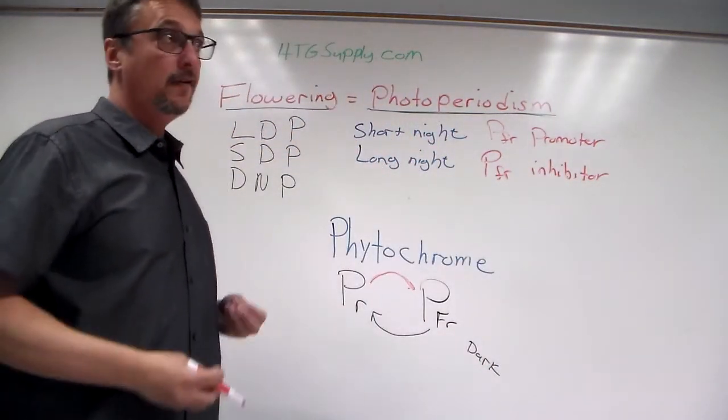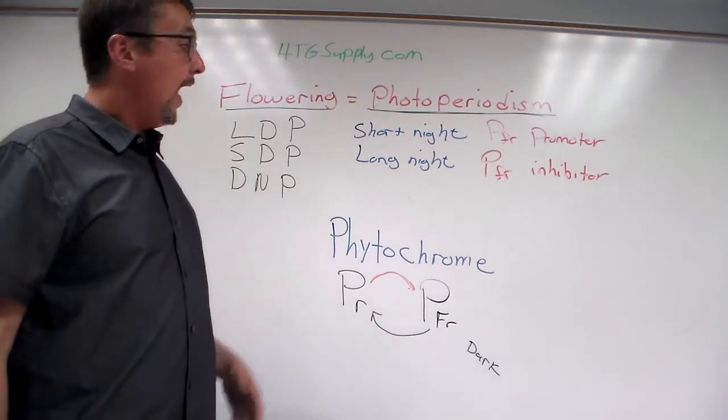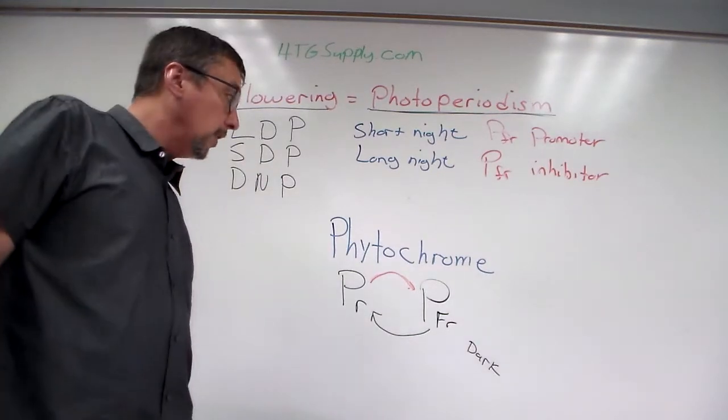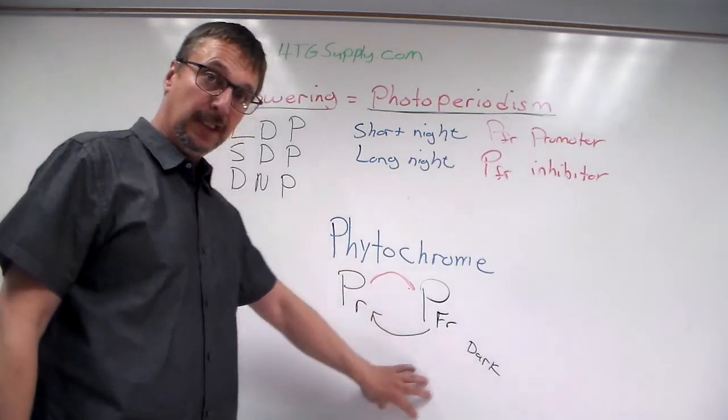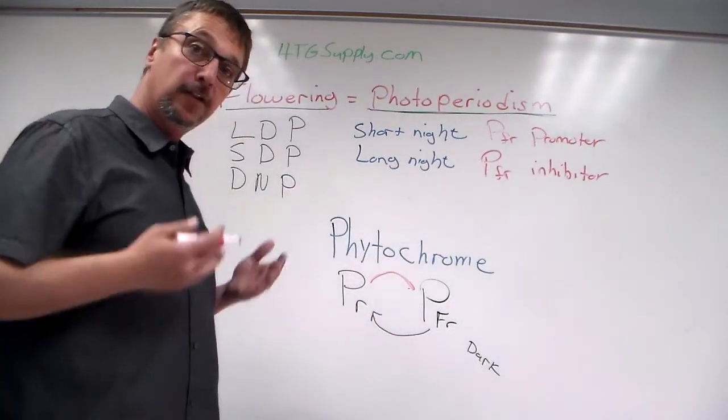And this is why these plants tend to flower in the spring or the fall. As the nights get longer and longer, there's more dark, which means there's going to be less phytochrome far red. And then the plants begin to flower.